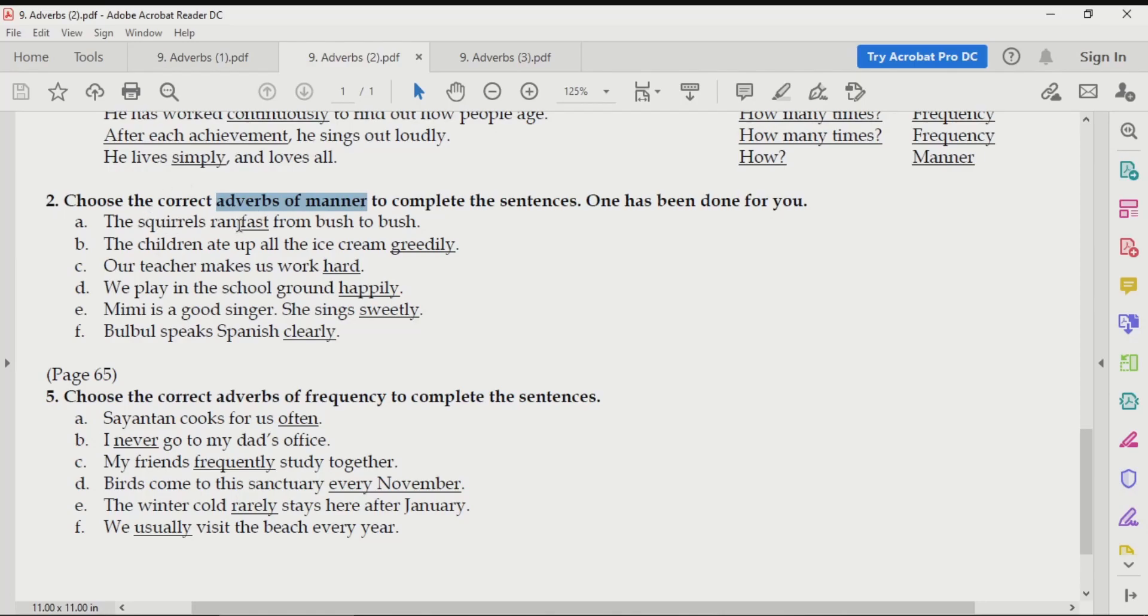The squirrels ran. You can say that the sentence is complete only with these three words. But some of you may ask, where did they run? How did they run? When did they run? Over here we have how they ran. The squirrels ran fast.